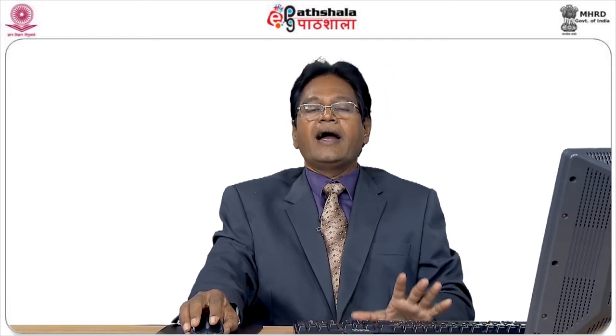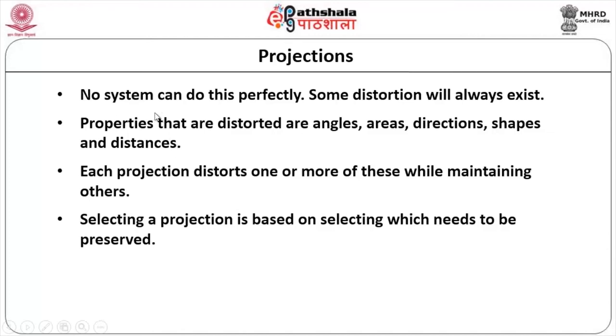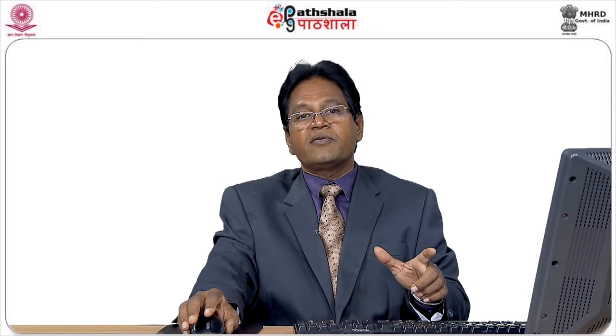When transforming data from 3 dimensions to 2 dimensions, it will result in some distortion — in scale, distance, or angle. No map projection can be 100% perfect with respect to all three. Distortions will always exist in angles, areas, directions, shapes, or distances. What each projection does is accept one or more types of distortion and preserve the others. The choice of projection depends on your application, your study area, and what must be preserved versus what can be distorted.